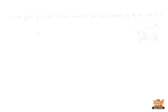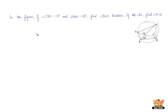Let us solve another problem. In the figure, if angle DBC equals 70 degrees and angle BAC equals 30 degrees, find angle BCD. Further, if AB equals AC, we also need to find angle ECD. To solve this, we use properties of cyclic quadrilaterals, triangles, and basic rules of geometry.